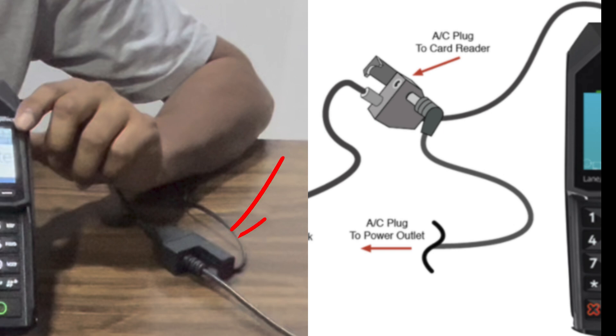To reset the reader, you just need to disconnect this cable from the power brick. Let it sit for 10 to 15 seconds and then plug it back in.